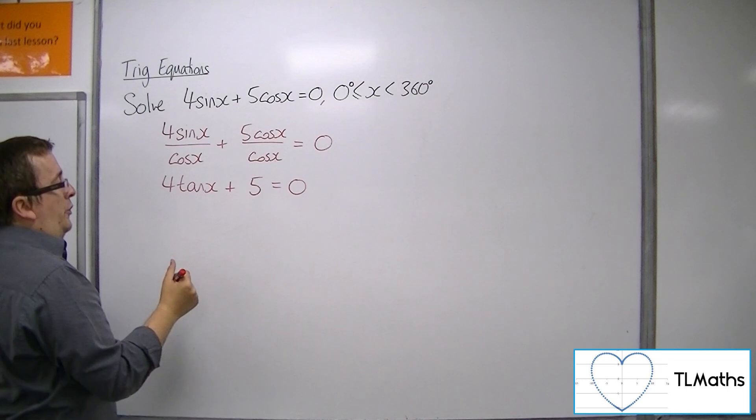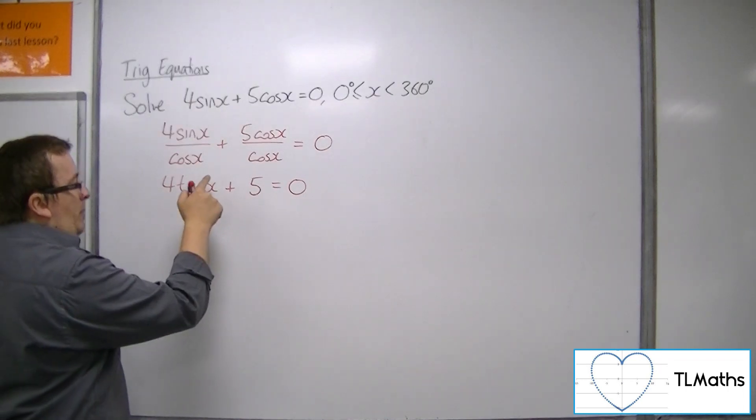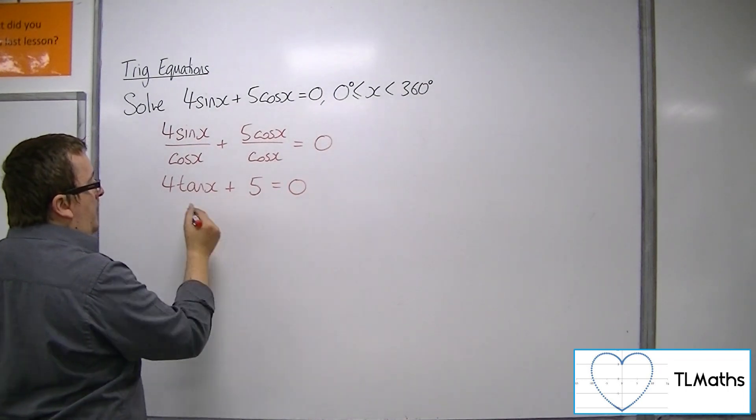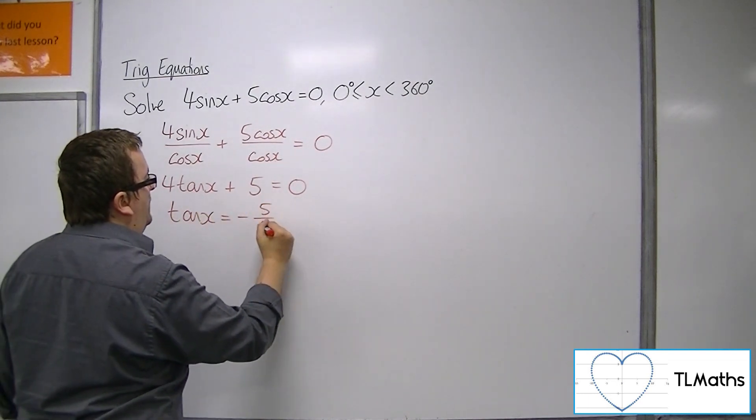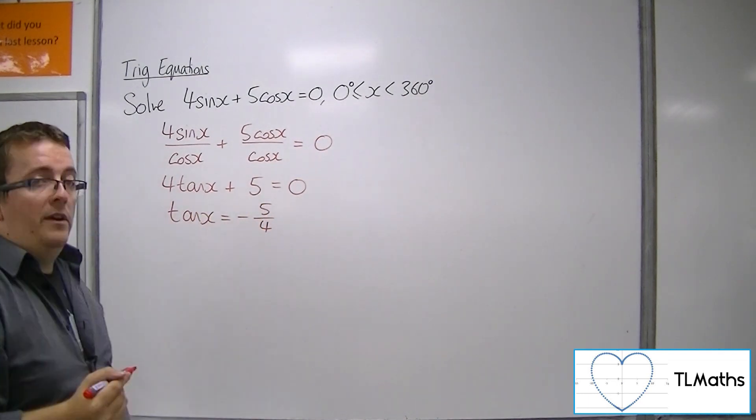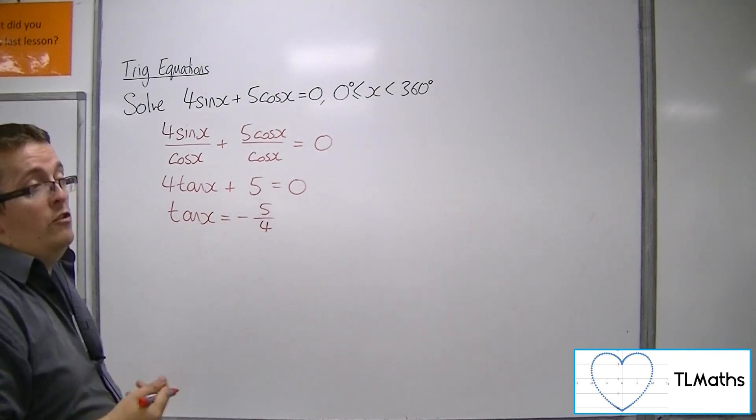So we're actually wanting to solve this equation. So by subtracting 5 from both sides and then dividing by 4, we're actually solving the equation tan x equals minus 5 quarters between 0 and 360.